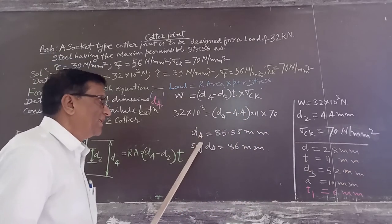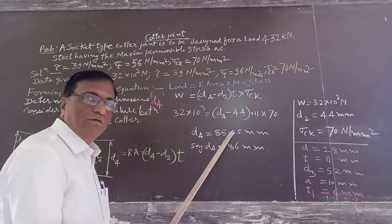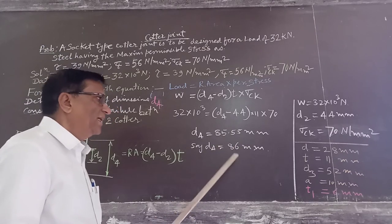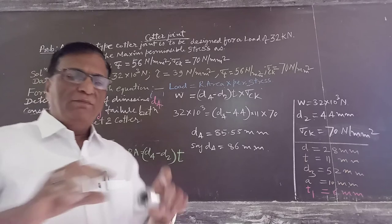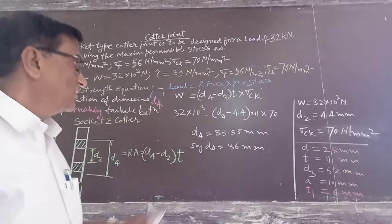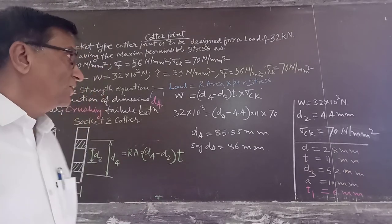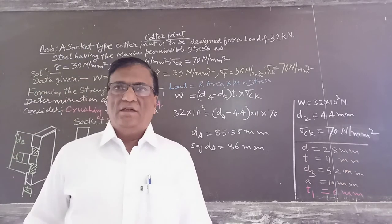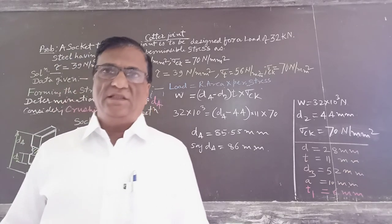The value of D4 comes out to be 85.55 mm. Taking the increased dimension, D4 equals 86 mm. So D4, the outer diameter of the socket collar, is 86 mm. We will meet in the next session to calculate the remaining dimensions. Thank you very much.